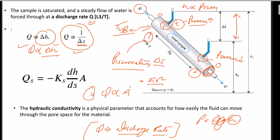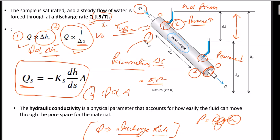By combining these three conclusions he came to the end product known as Darcy's law. This equation is very important. Q, the discharge rate (units of volume per time, L³/T), is equal to minus K times dH/dS times A. K here is the constant of proportionality — it is known as hydraulic conductivity.